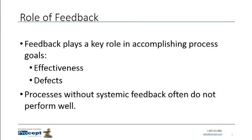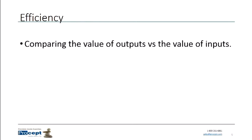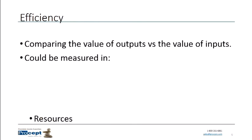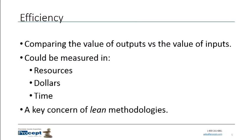When we talk about efficiency, we're comparing the value of our outputs versus the value of our inputs — this could be resources, dollars, time, all of these different measures. Obviously we want to produce more than what we put in. Efficiency is a primary concern for lean methodologies. The name 'lean' comes from the idea that we don't have a lot of waste in our processes. So we're going to look at a technique from lean, which is value stream mapping — a tool to help us identify and eliminate waste and be more efficient.